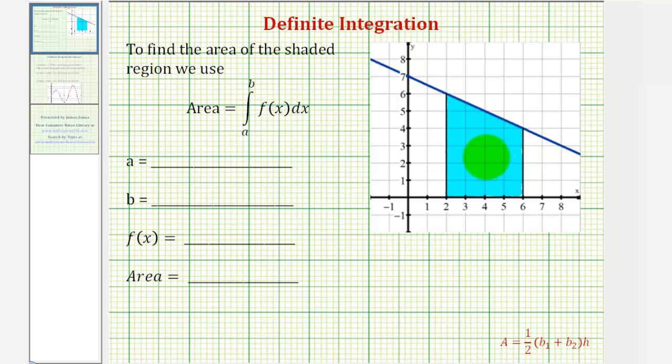We want to find the area of the shaded region using a definite integral. If the function is continuous and non-negative on the closed interval from a to b, then the area under the function and above the x-axis is equal to the integral of f(x) from a to b.